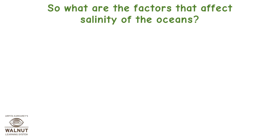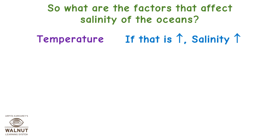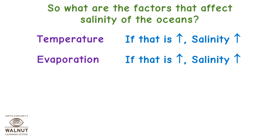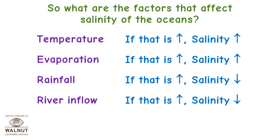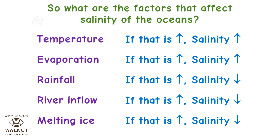What are the factors that affect salinity of the ocean? Temperature — if that is high, salinity is high. Evaporation — if that is high, salinity is high. Rainfall — if that is high, salinity is low. River inflow — if that is high, salinity is low. Melting ice — if that is high, salinity is low.